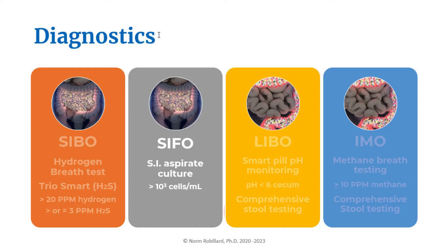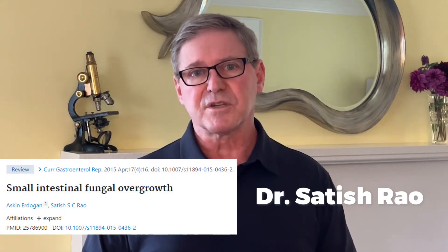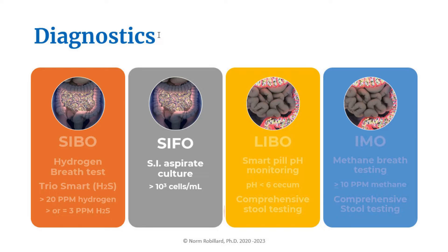For SIFO, small intestinal fungal overgrowth, there is no standard test at this point. However, it is possible to sample the small intestine via endoscopy and quantitate the amount of fungal growth. This was done by Dr. Satish Rao, a gastroenterologist at Augusta University who helped define a SIFO diagnosis. While this method is a bit invasive, it might be worth it if someone is really struggling. According to Dr. Rao, a positive test is defined as having greater than a thousand fungal cells per milliliter.